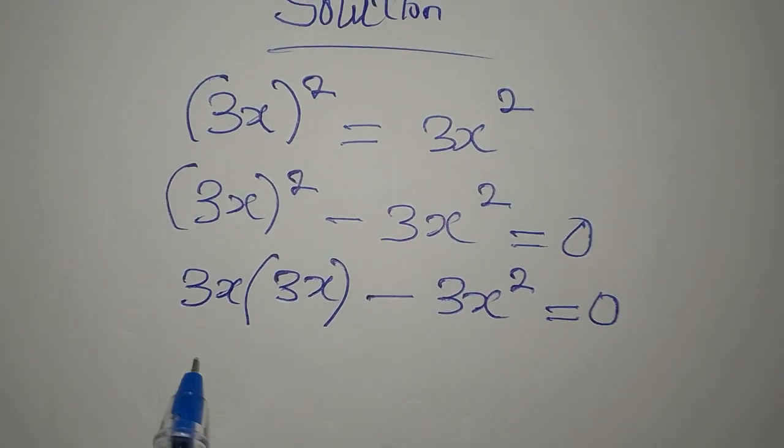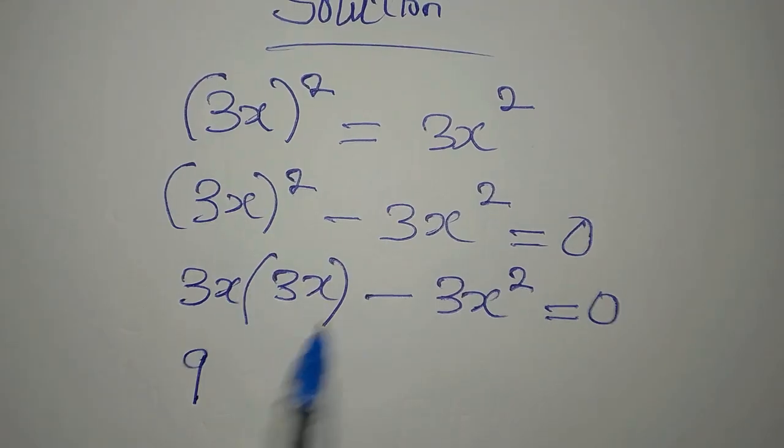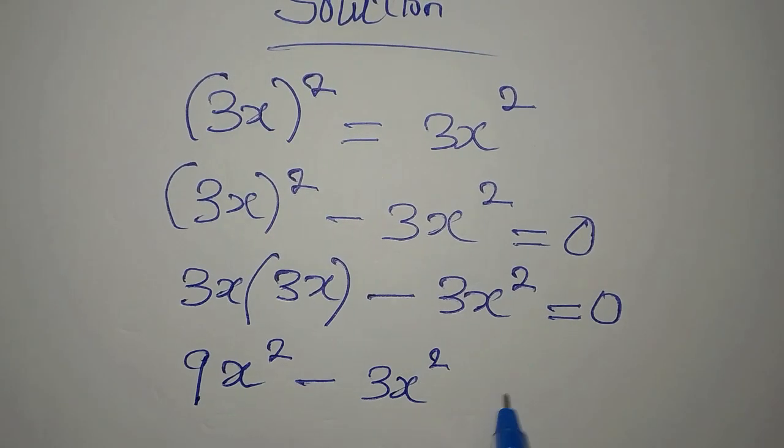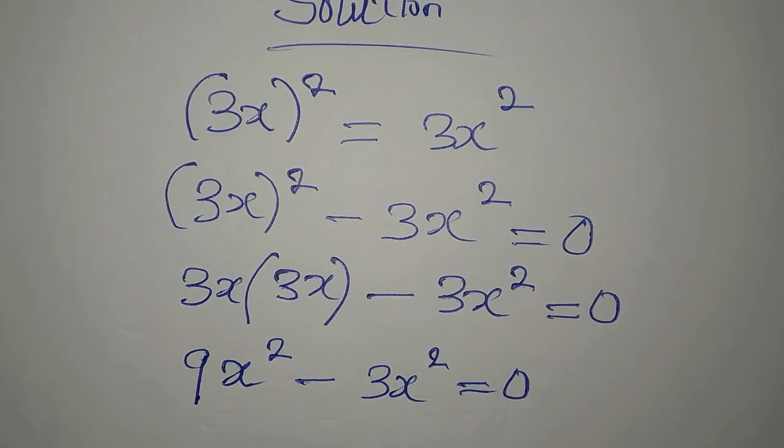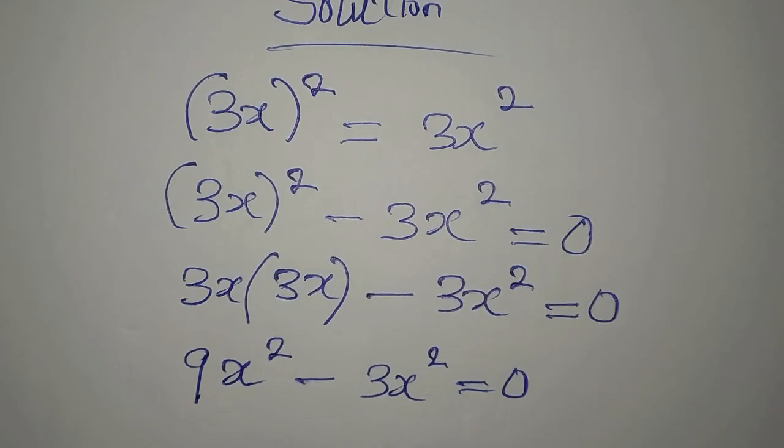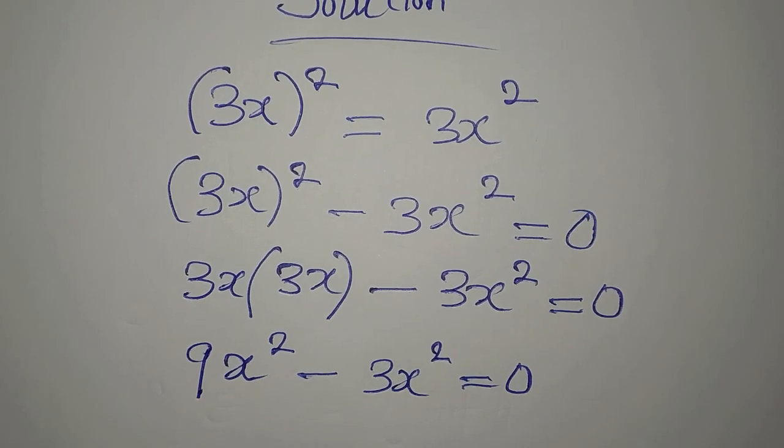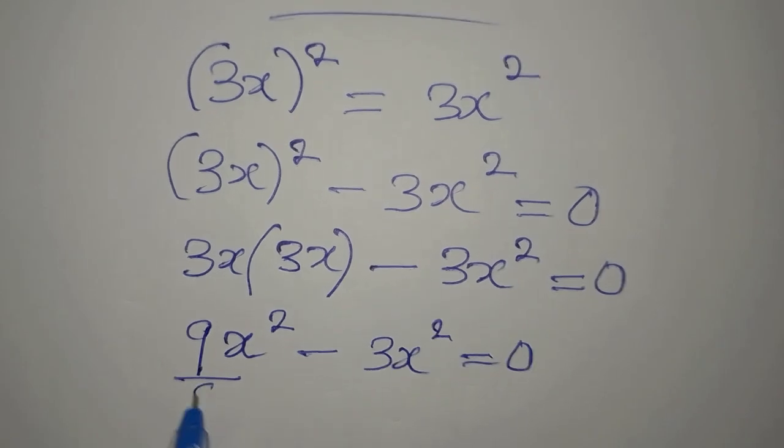3 times 3 will give 9, x times x will give x², then minus 3x² equals zero. Okay, so this is simple because we can even decide to divide this by 3 to reduce the equation.